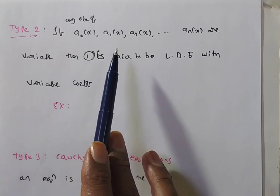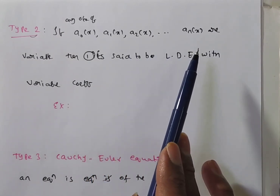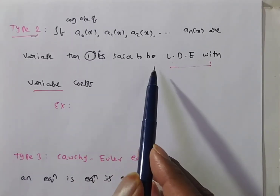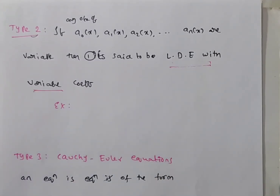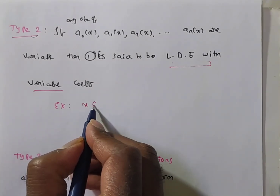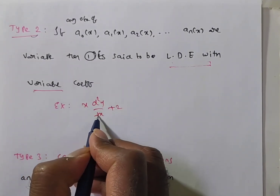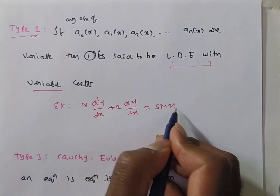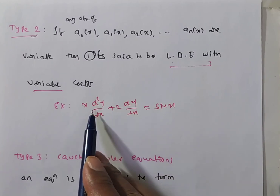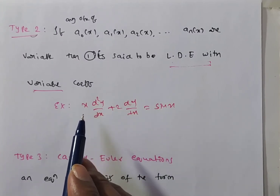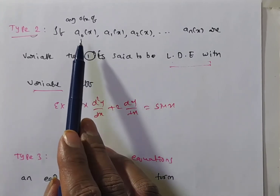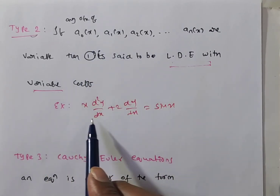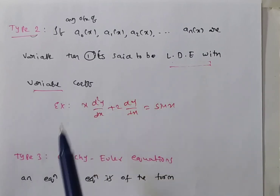For example: x · d²y/dx² + 2 · dy/dx = sin x. The coefficient of dy/dx is 2 (constant), but the coefficient of d²y/dx² is x (variable). Since at least one coefficient is variable, this is a linear differential equation with variable coefficients.